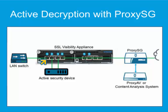With port 1 connected to the client or local network, port 2 to the security device, port 3 to the other side of the security device, and port 4 to the ProxySG or outside of the network, a failure will allow the security device to continue to receive all traffic. The only loss in this case will be the SSL decryption.